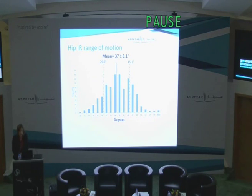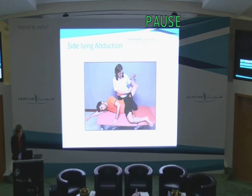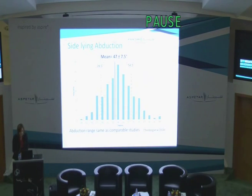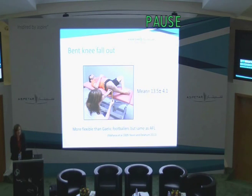In terms of range of motion, for internal rotation in hip flexion, the mean was 37 degrees, similar to ranges from other studies with soccer players. We'll be interested in this population, but also perhaps the hyperflexible athletes — it might be interesting to see if they are at increased risk of developing hip and groin pain. For sideline abduction, the mean was 47 degrees, which is very similar to the abduction range from the Torbo study from this year, even though measured in a different way. For the bent knee fallout test, the mean was 3.5, showing that footballers in this cohort are more flexible than Gaelic footballers but very similar to Maliaris' youth AFL players. Bent knee fallout is not a test that has been looked at prospectively, so we're very interested to see how predictive this test is of future injury.